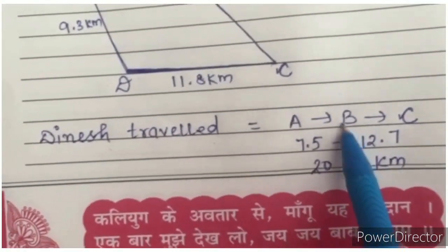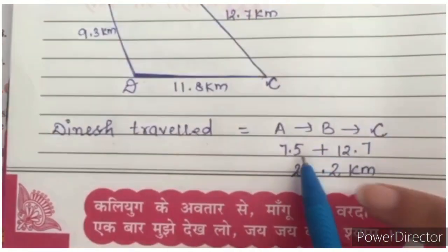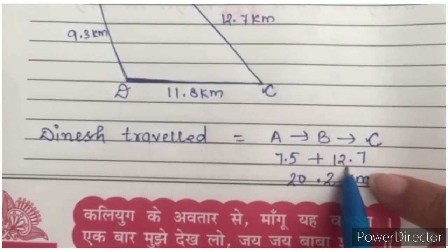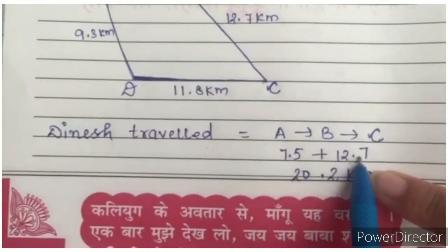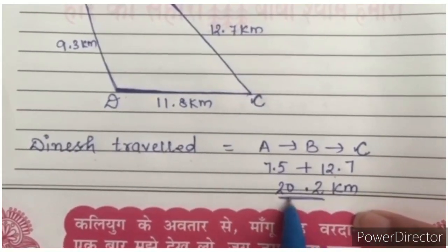Dinesh travelled from A to B and B to C. A to B, we will write 7.5. B to C, it is 12.7. So we have written the distance here. Add these two. You will get 20.2 km.